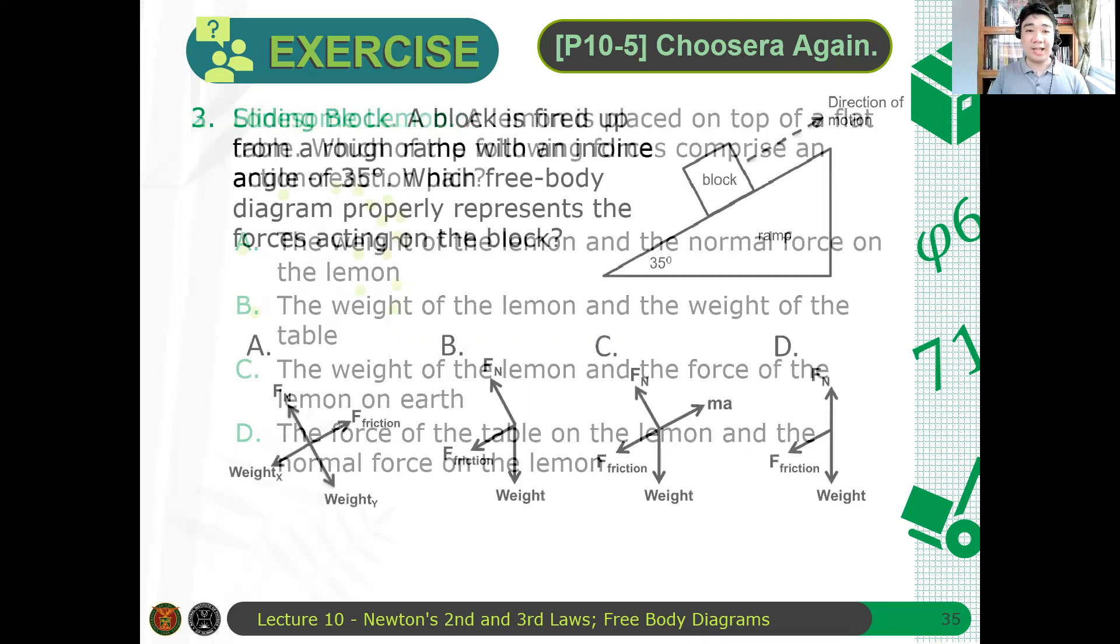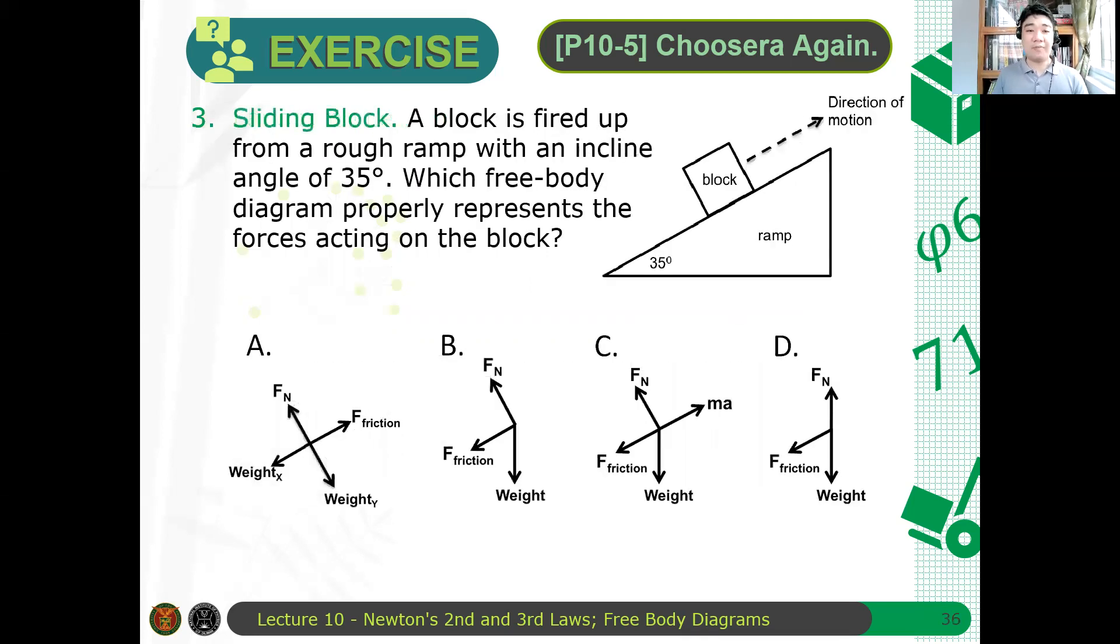Now, for the third item, sliding block. A block is fired up from a rough ramp with an inclined angle of 35 degrees. Which free-body diagram properly represents the forces acting on the block? Again, this also, I think, an exam question before. So A, is it this diagram here? Is this diagram here, letter B? Is this diagram here, letter C? Or is this diagram here, letter C?